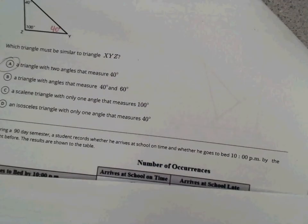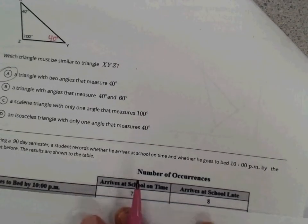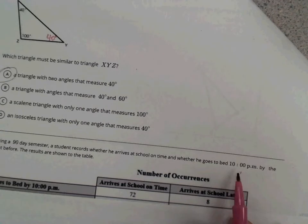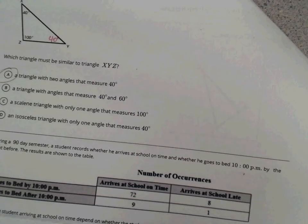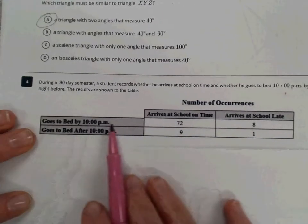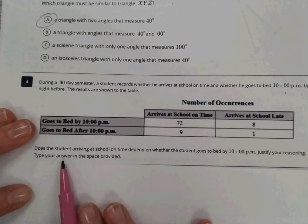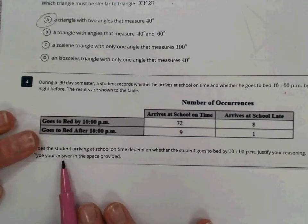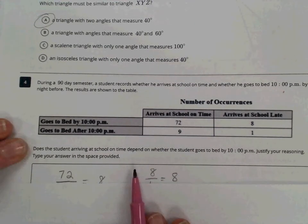Question 4. During a 90-day semester, a student records whether he arrives at school on time and whether he goes to bed by 10 PM the night before. The results are shown in the table. So there are a couple of different ways to do this. This is a question about probability and the fact that these two independent events are occurring, getting to school on time and going to bed by 10 PM.